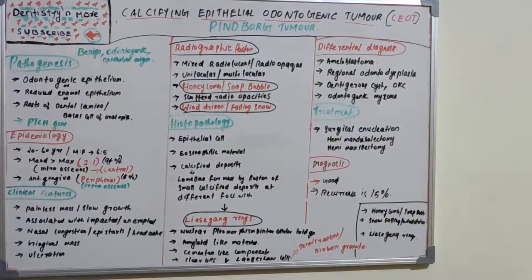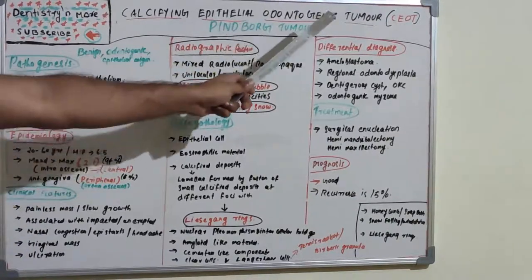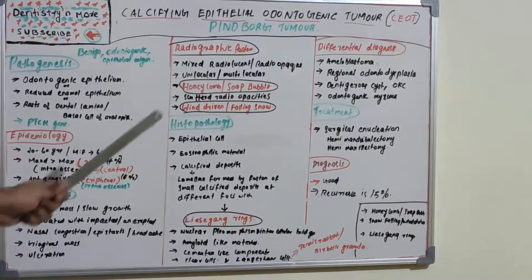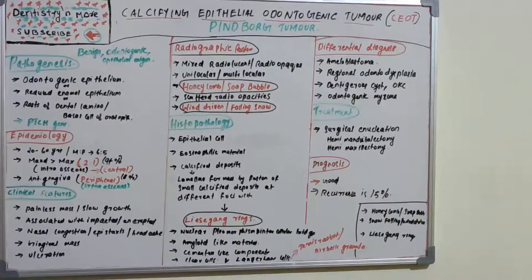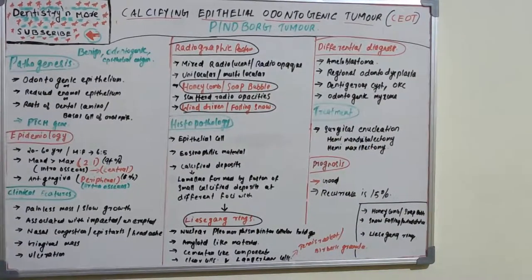Hello everyone, welcome back to another session on dentistry and more. Today we have a new section in oral pathology — that is Calcifying Epithelial Odontogenic Tumor, or CEOT, which is widely known as Pindborg tumor. Last sessions we covered various syndromes, around nine to ten. Now we are moving on to the tumor section, and the first one is CEOT or Pindborg tumor.